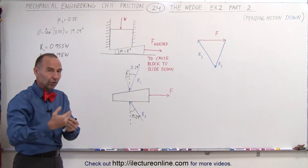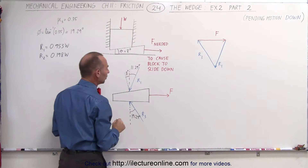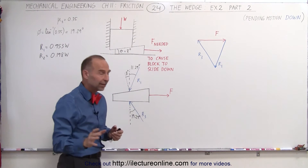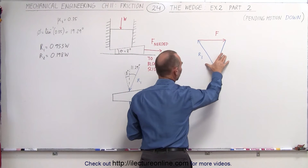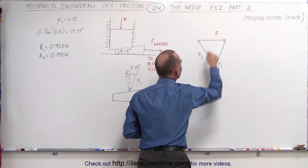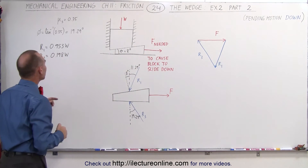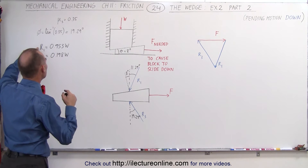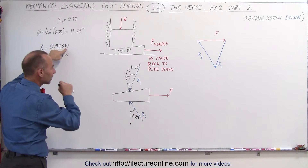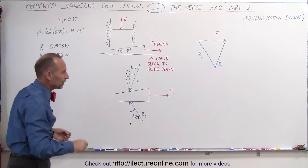Since nothing has started moving yet, we're at the pending motion moment. We can add the three forces together and that should add up to zero — this is the vector sum of those three forces. What we need to do now is find the three angles made by those three forces. Also notice that in the previous video, in part one, we already figured out the value of R1 in terms of the weight of the block, and that will allow us to find the relative force in R3 as well.